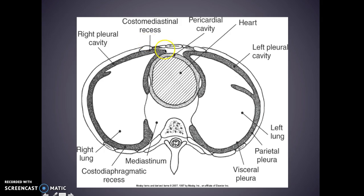When we're looking at the fluid cavities, we have the pericardial cavity here, your left pleural cavity and your right pleural cavity, and this is your mediastinum in here. You have your parietal pleura and your visceral pleura, and in between there is where fluid collects in patients.